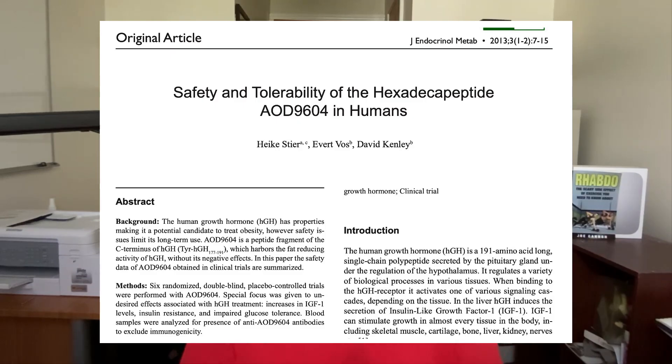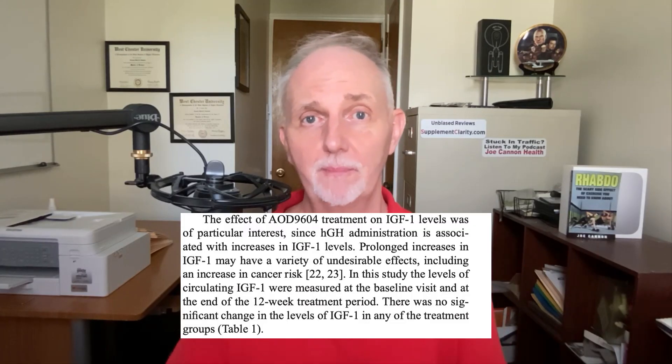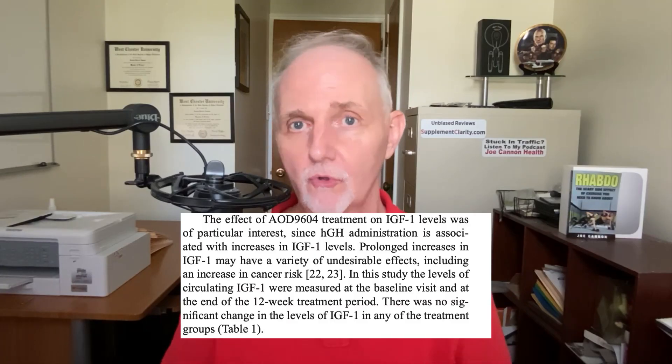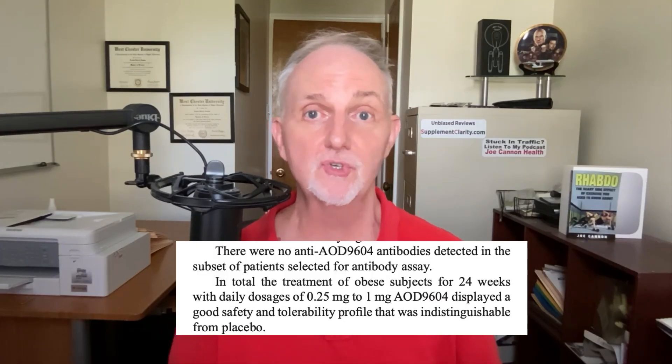But what about for people? That brings us to this company-sponsored safety trial, which summarizes the results of six human randomized controlled trials. Even though AOD 9604 is derived from human growth hormone, taking this peptide does not raise growth hormone levels in people. Just like with the mouse research, the peptide doesn't appear to increase the risk of insulin resistance in people, and it doesn't appear to trigger an immune response because antibodies against the peptide were not detected. Overall, side effects were pretty mild, although at higher doses it was speculated the peptide might cause increasing gastrointestinal distress.